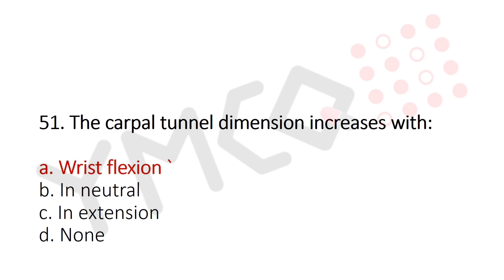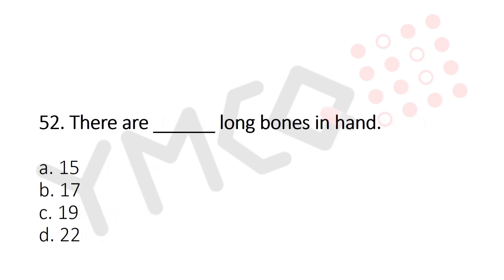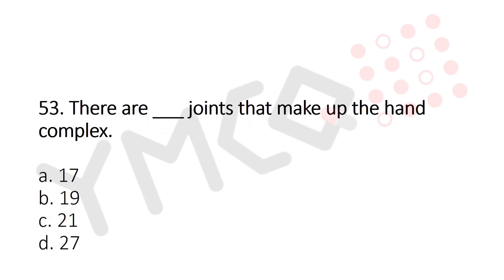Question 52: There are how many long bones in the hand? Option A: 15, Option B: 17, Option C: 19, Option D: 22. The answer is Option C, 19.